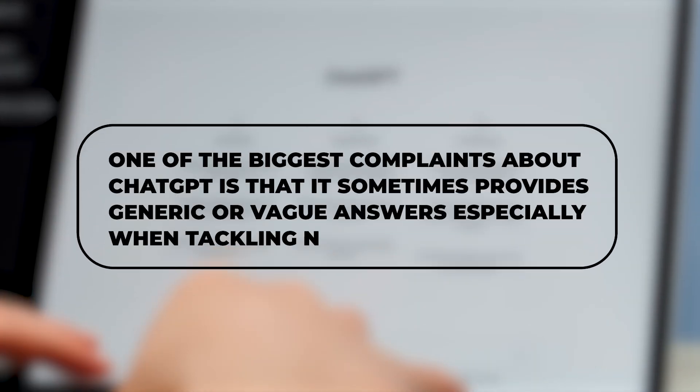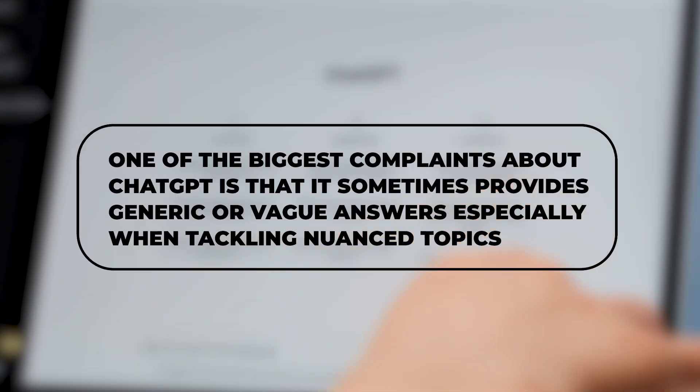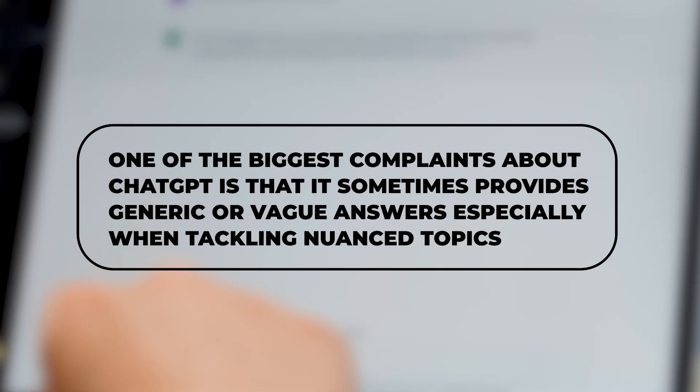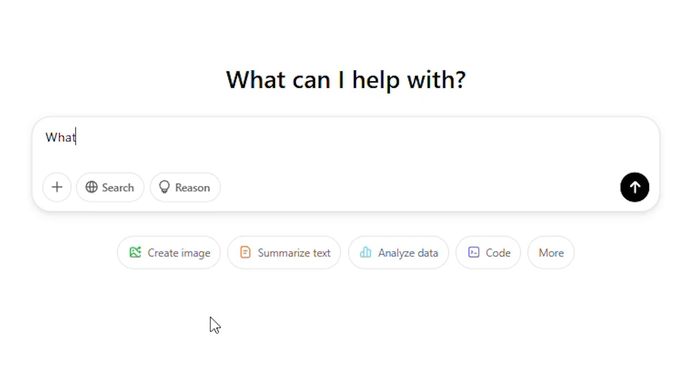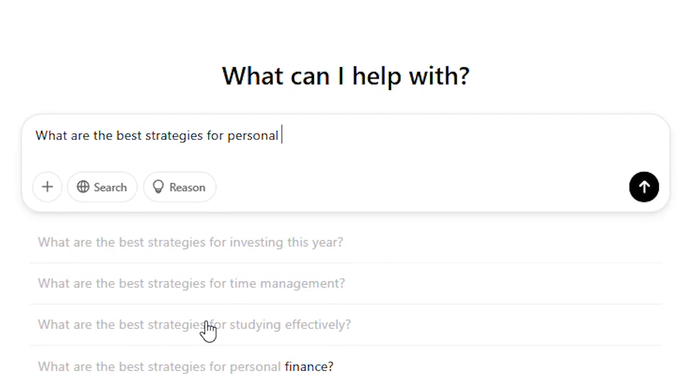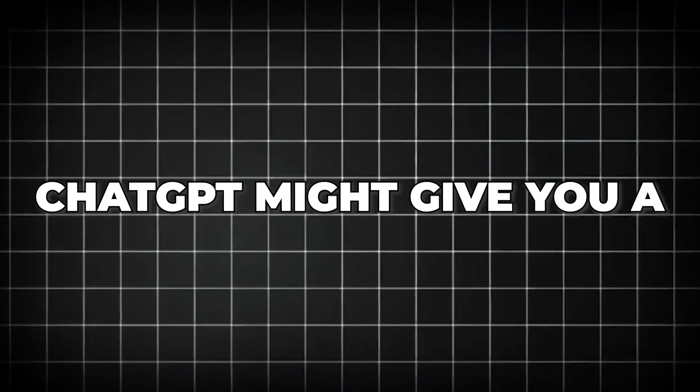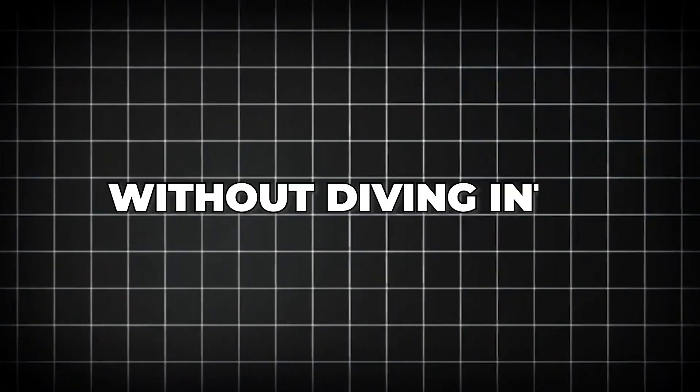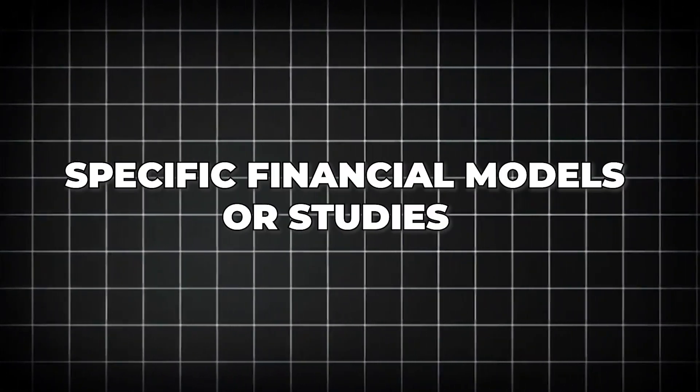One of the biggest complaints about ChatGPT is that it sometimes provides generic or vague answers, especially when tackling nuanced topics. For instance, if you ask, "What are the best strategies for personal finance?" ChatGPT might give you a well-written but generic list of saving, investing, and budgeting tips without diving into specific financial models or studies.